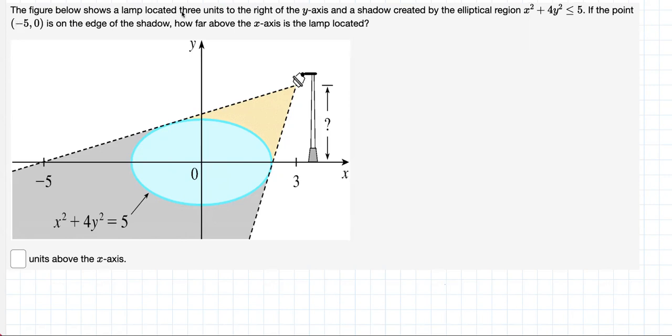The figure below shows a lamp located three units to the right of the y-axis and a shadow created by the elliptical region x squared plus 4y squared less than or equal to 5. If the point negative 5, 0 is on the edge of the shadow, how far above the x-axis is the lamp located?